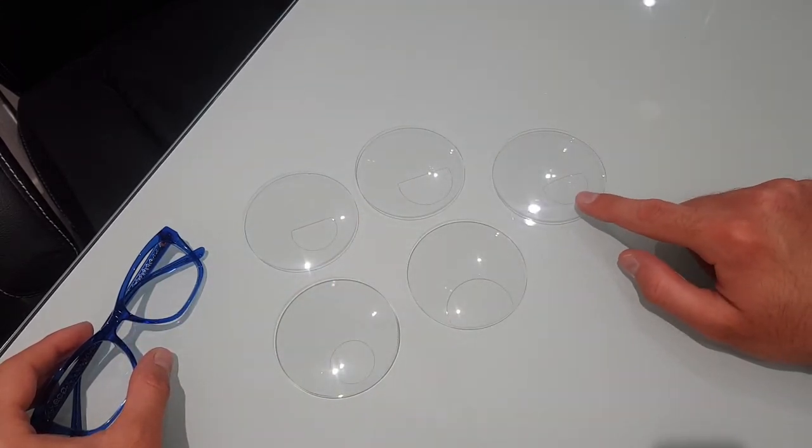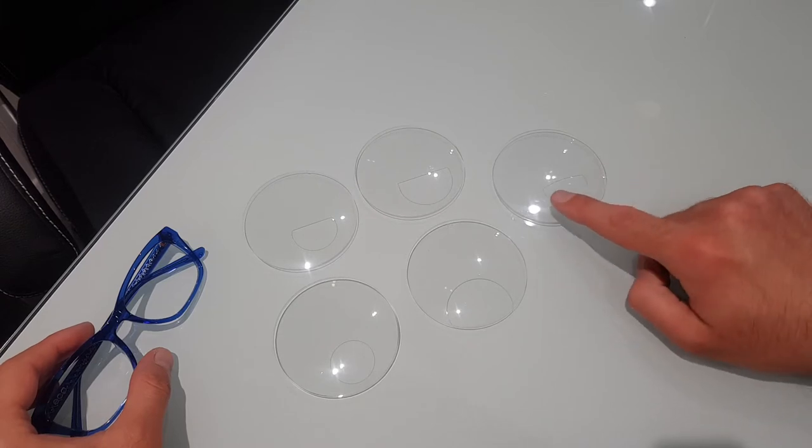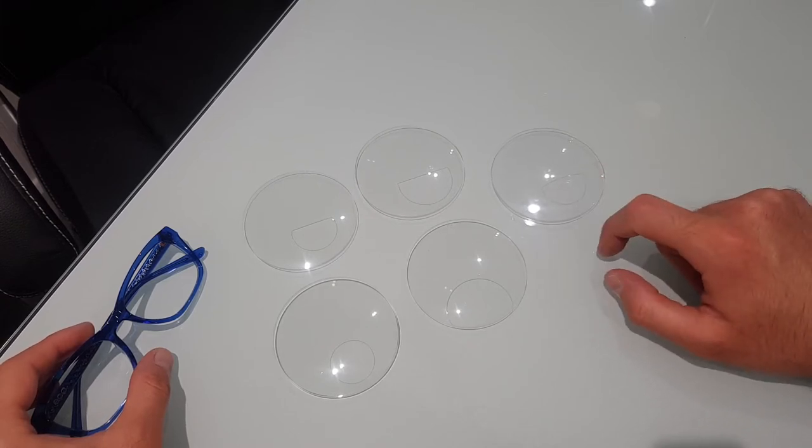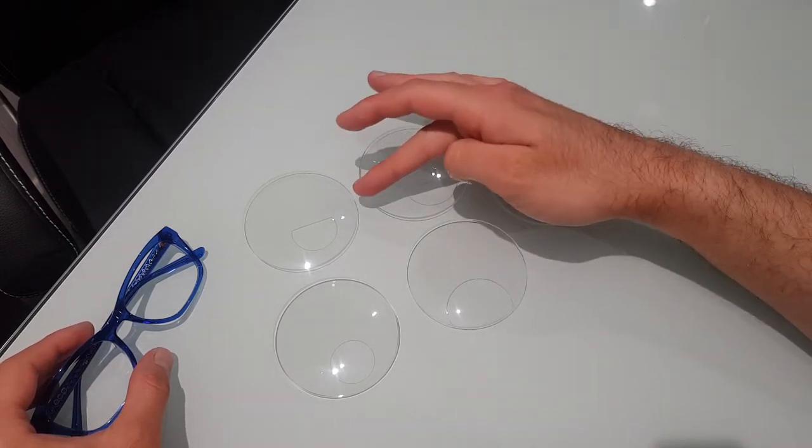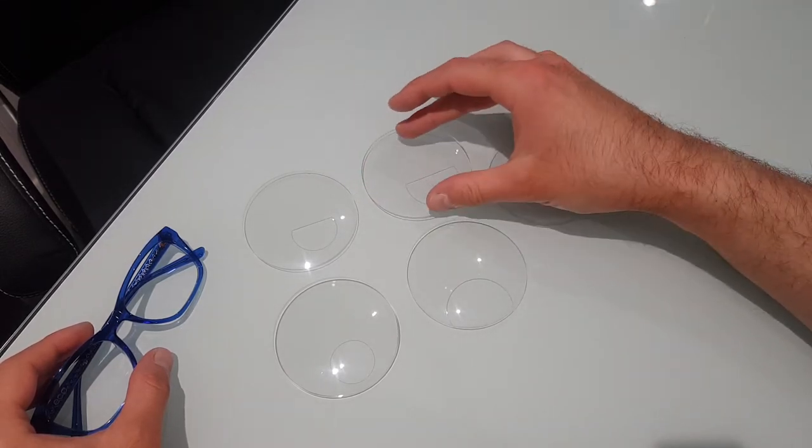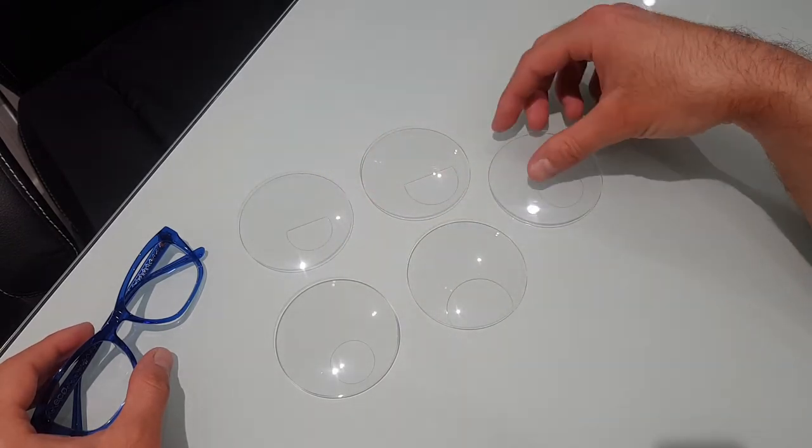This one here is called a C28 for a curved top, and that again is 28 millimeters across the top. You can get other bifocals as well where you have the reading section that goes across the whole lens, but that's not as common as these five here.